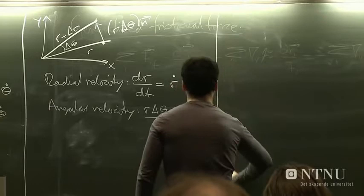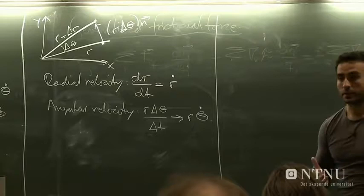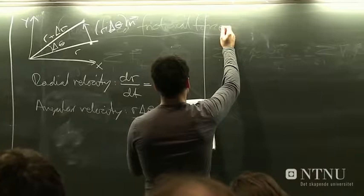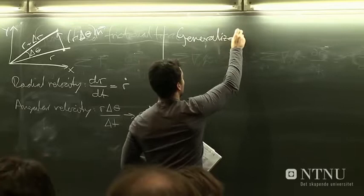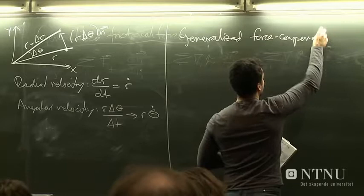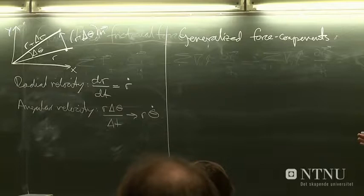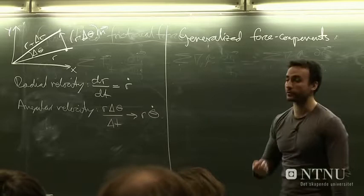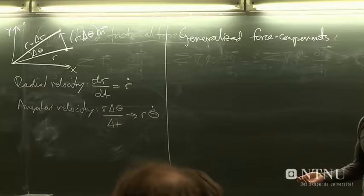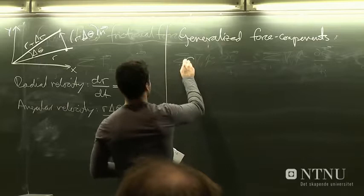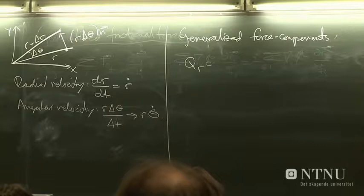Okay, so we have the Lagrangian for the system, which is just a kinetic energy. So let's try to set up the Lagrangian equations. And to make the system slightly more general, let's in fact include the generalized force in the system. So we take into account the possibility that we might have some force acting on the particles. Now, in a 2D plane, you can decompose the force into two components. You can have a radial component of the force.